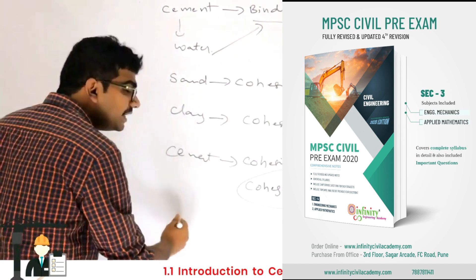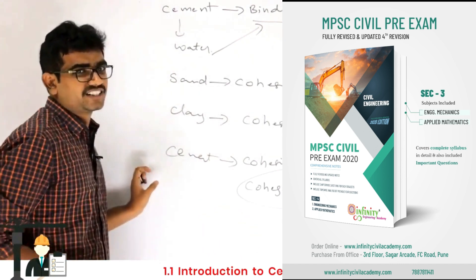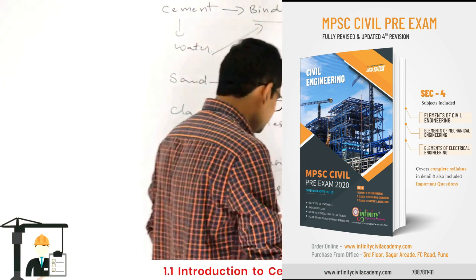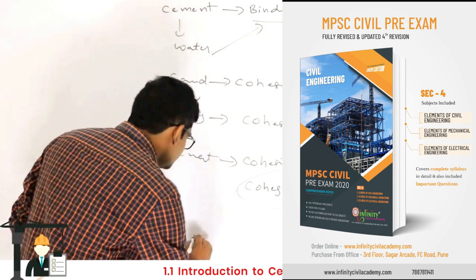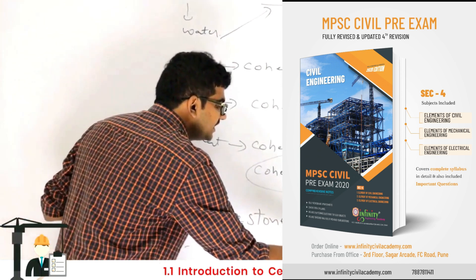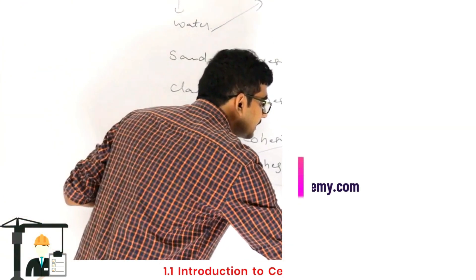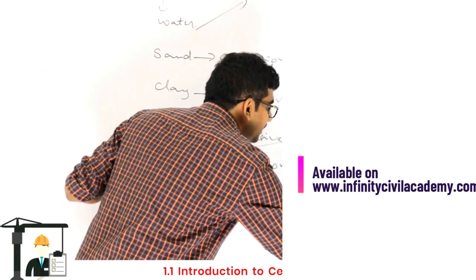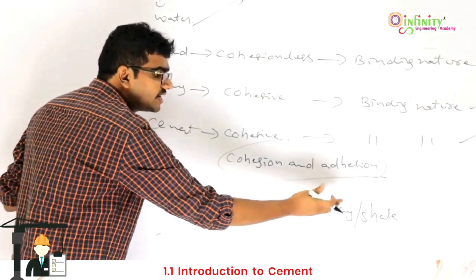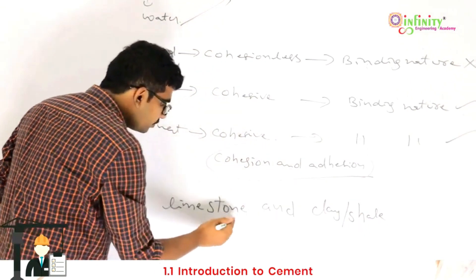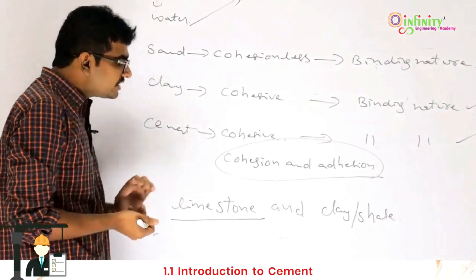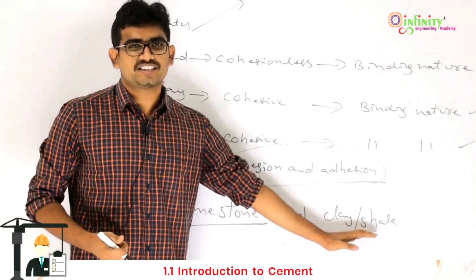What are the raw materials to manufacture cement? Cement is manufactured using two raw materials: the first one is limestone, and the second one is clay or shale. We can use either clay or shale, but limestone must always be used. These two are the raw materials to manufacture cement.